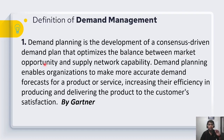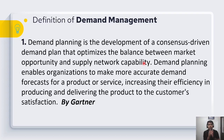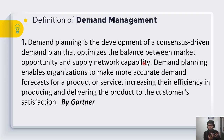The definition states that demand planning optimizes the balance between market opportunity and supply network capability. The point is to reach a consensus or final plan between these two. Market opportunity is basically the demand that the customer is putting in, while supply network capability is the ability of the organization to support that plan — how much they can produce.